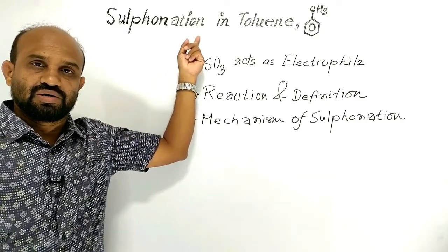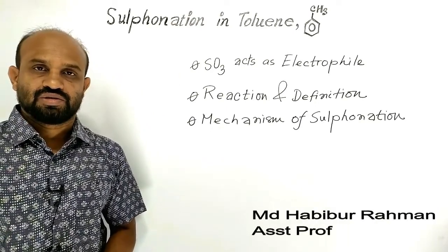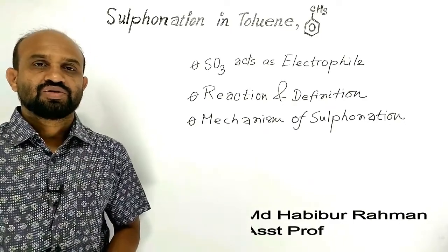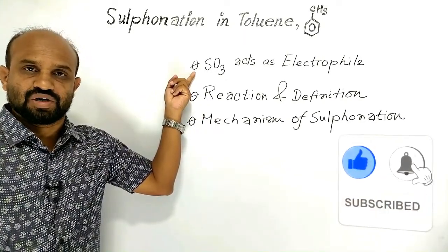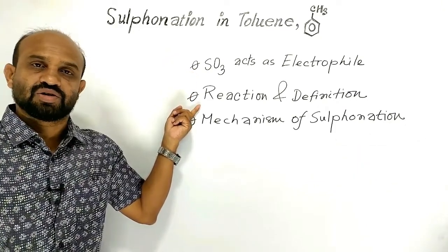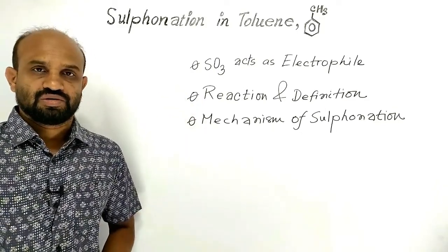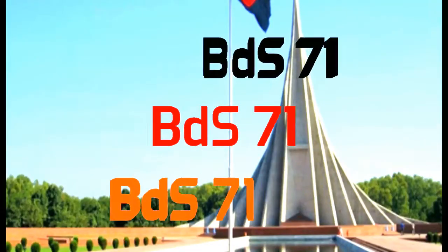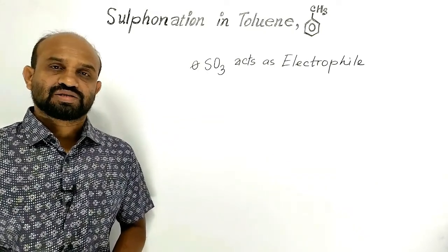Sulfonation in toluene: a reaction between toluene and concentrated sulfuric acid at high temperature. In this lesson we are going to learn: why sulfur trioxide acts as an electrophile, the definition of sulfonation, and the mechanism of sulfonation. Let's begin by seeing how sulfur trioxide acts as an electrophile.